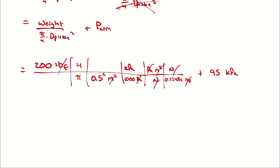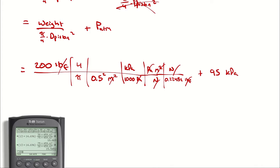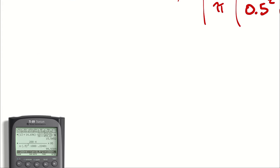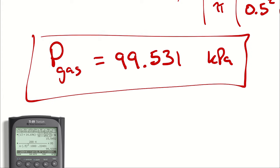Calculator, if you would, please. 200 times 4 divided by, I'm going to use the fancy pi button on this calculator. Multiplying by 0.5 squared times 1,000. That's 100, John. One more zero. There you go. Times 0.22481. Look, guys, I remembered the decimal. Aren't you proud of me? Plus 95. Probably going to be a syntax error because I forgot my opening parentheses. So, I will jump all the way back to the left. And then a step to the right. And I get 99.53. I'll add the one in just for good measure. P_GAS is 99.53 kilopascals.